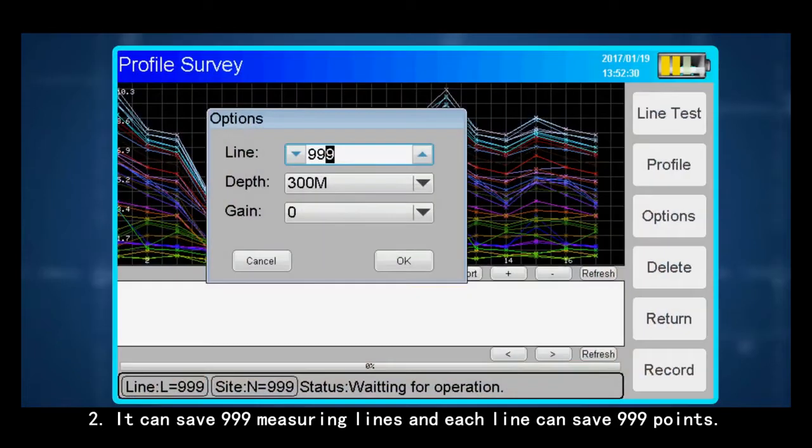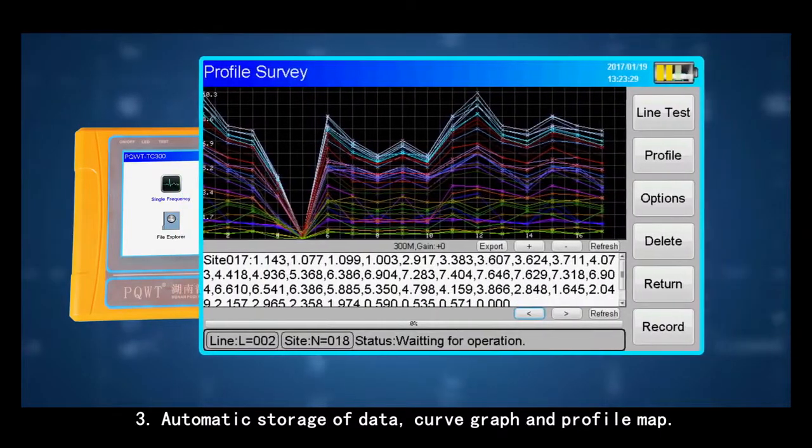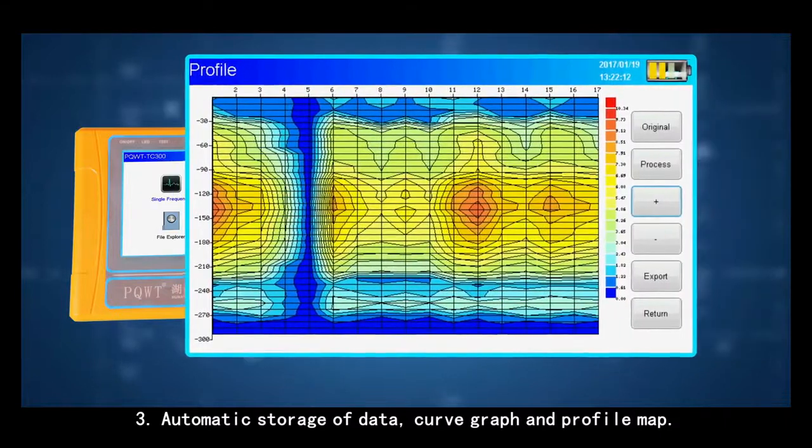Second, it can save 999 measuring lines and each line can save 999 points. Third, automatic storage of data, curve graph and profile map.